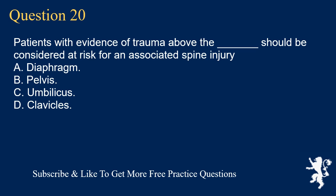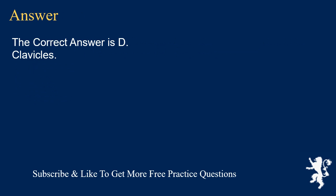Question 20. Patients with evidence of trauma above the underscore should be considered at risk for an associated spine injury. A. Diaphragm. B. Pelvis. C. Umbilicus. D. Clavicles. The correct answer is D. Clavicles.